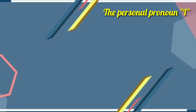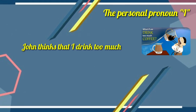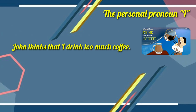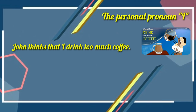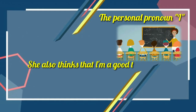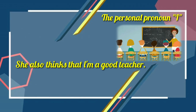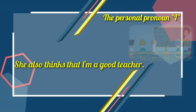Personal pronoun I — we always use I as a capital letter. Example: 'John thinks that I drink too much coffee.' Here the single letter I in the middle of the sentence is always written as a capital letter. Also in contracted forms, the word I is always capital. Example: 'She also thinks that I am a good teacher.'